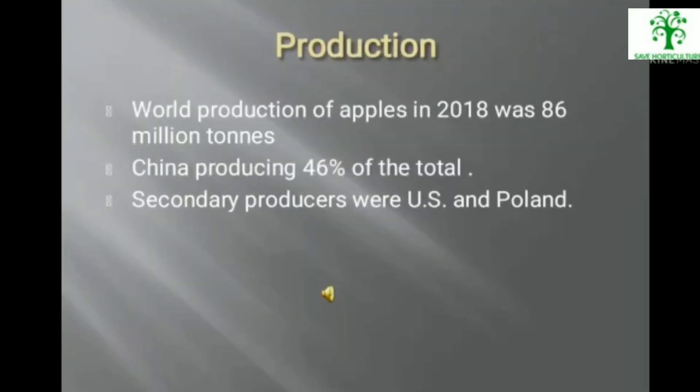World production of apple in 2020 was 86 million tonnes, with China producing 46% of the total, making it the leading producer. Secondary producers were the US and Poland. In India, Jammu and Kashmir, Himachal Pradesh, and Uttarakhand are the leading apple-producing states.